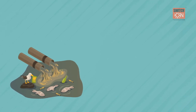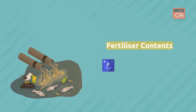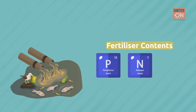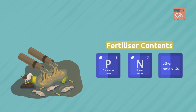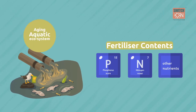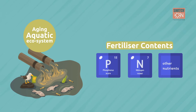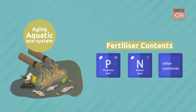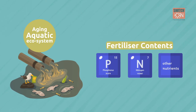Eutrophication is the gradual increase in the concentration of phosphorus, nitrogen and other nutrients used in fertilizers in an ageing aquatic ecosystem such as a lake. The residuals enter the ecosystem primarily by runoff from the land.